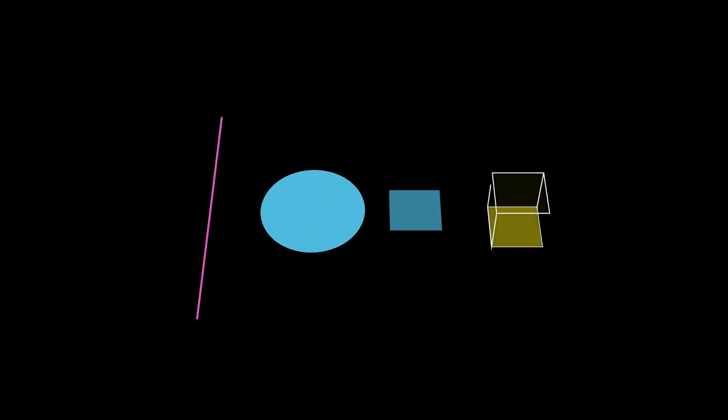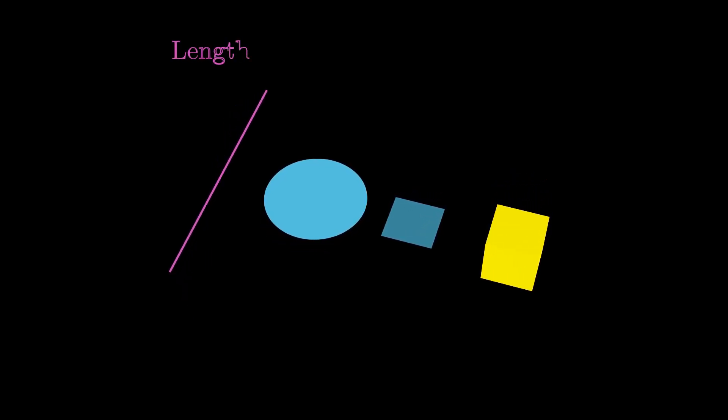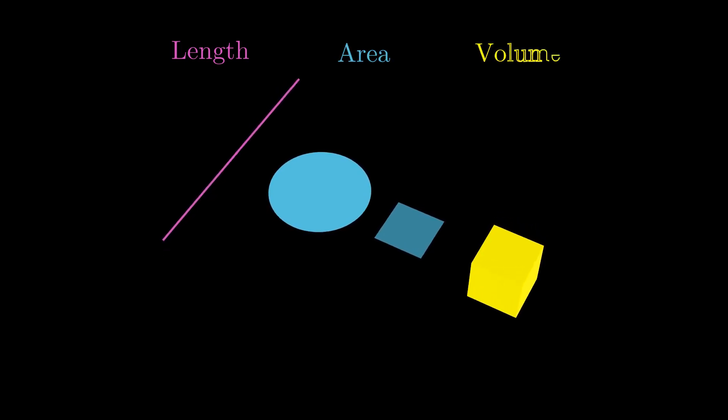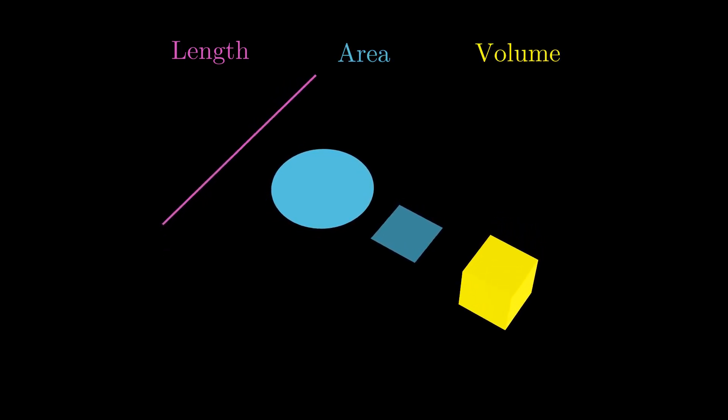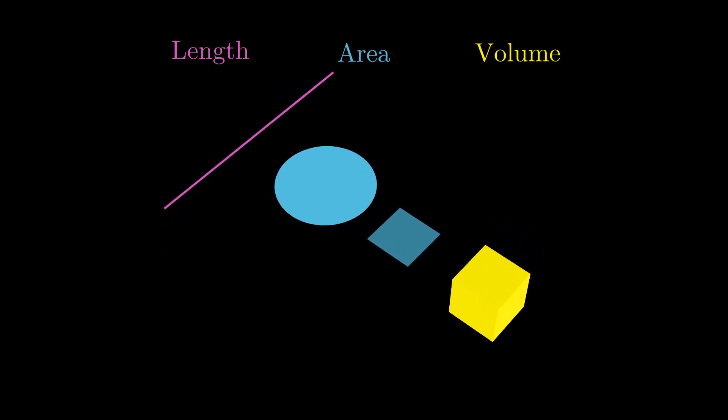Our formal introduction to the world of shapes starts with lines, circles, squares and cubes, serving as a foundation for shapes in classical Euclidean geometry. We subsequently learned to calculate the length, area and volume of such shapes, and it does come in very handy at times.